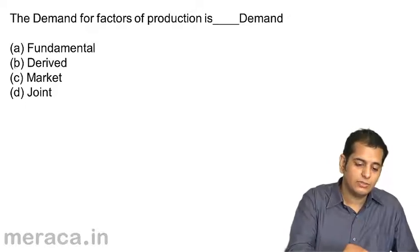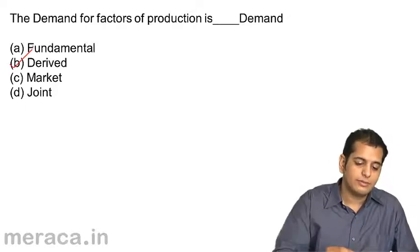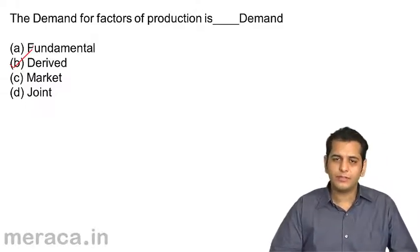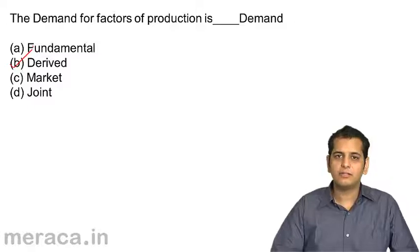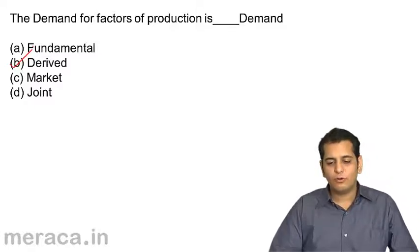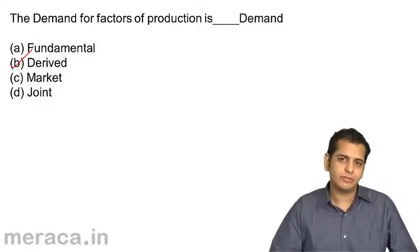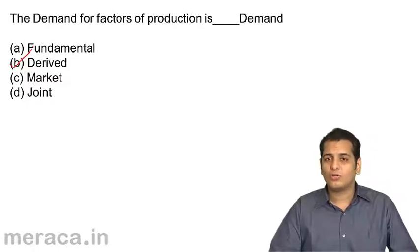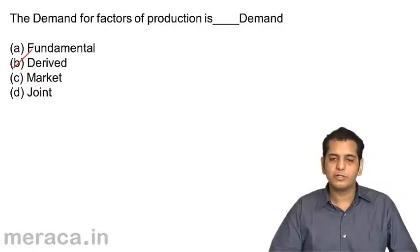The answer is Derived Demand. Now, why do you think is the demand for factors of production derived? Why is it not autonomous or joint demand?